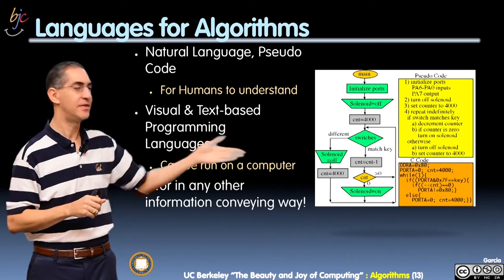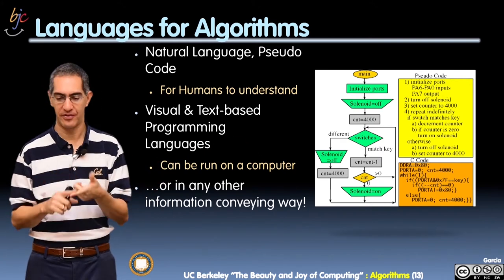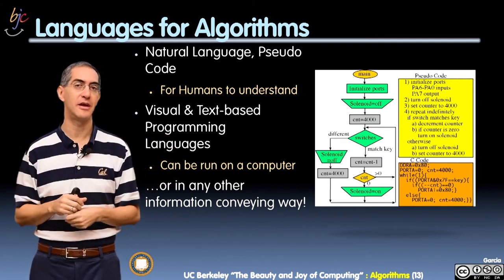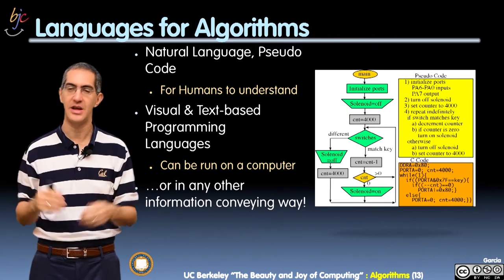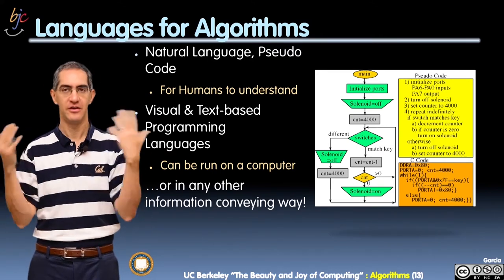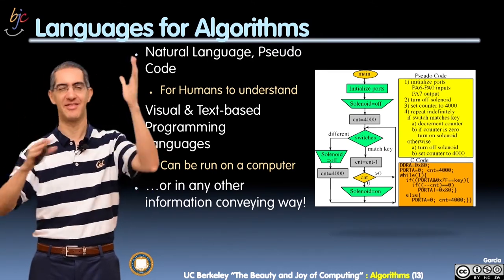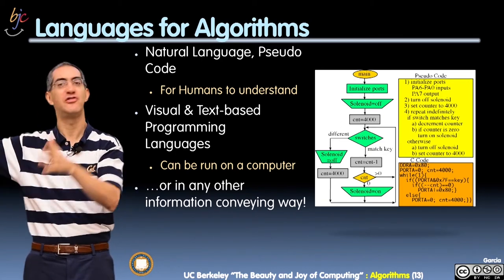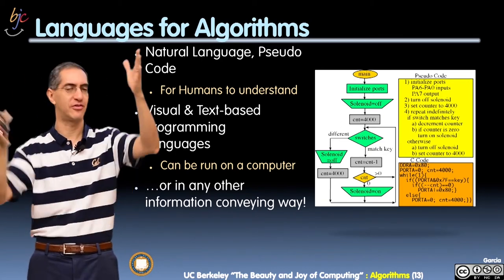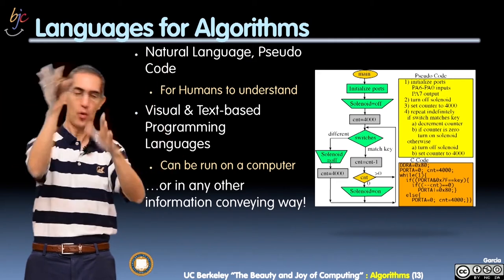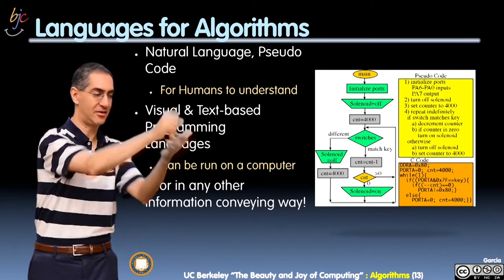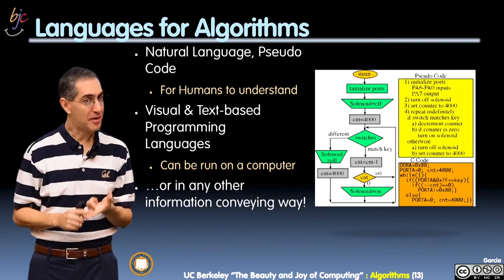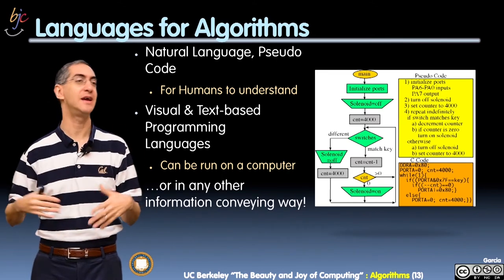Pseudocode is very common. This image shows both a flowchart, which is often used — we're not teaching flowcharting here — but it's often used for some folks to be able to decide, because visualizing they see the code flows in different angles. So geometrically, flowcharts are useful to kind of geometrically represent where the current active line of code is. We talked about pseudocode being a very common way.